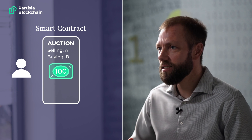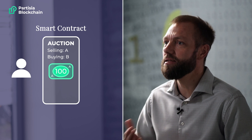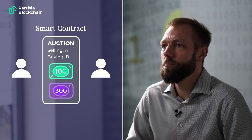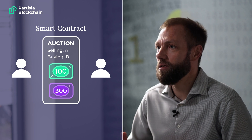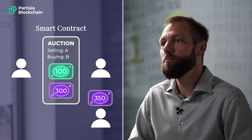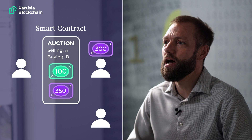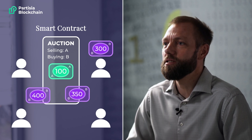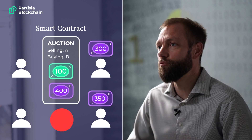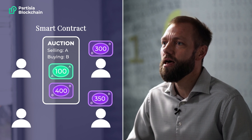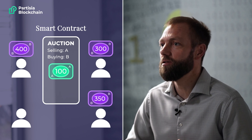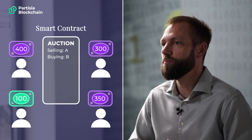Now everyone can see that the smart contract is available and can interact with it. In this example, we first have Bob who bids 300 tokens of type B and is now the highest bidder. Then Karl comes along and is also interested in purchasing these tokens, so he bids 350 tokens and is now the highest bidder. Finally, Denise, at the last moment, bids 400 tokens and becomes the highest bidder. When the time of the auction has run out, Alice executes it, and automatically the funds from Denise are transferred to Alice and the 100 tokens that Alice put up for sale are transferred to Denise. And now the auction has been completed.